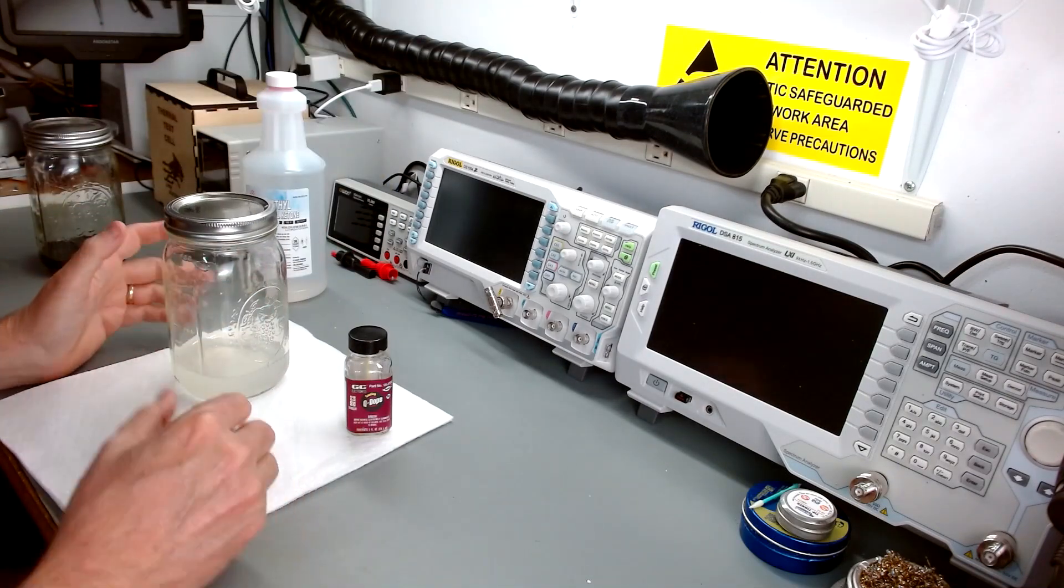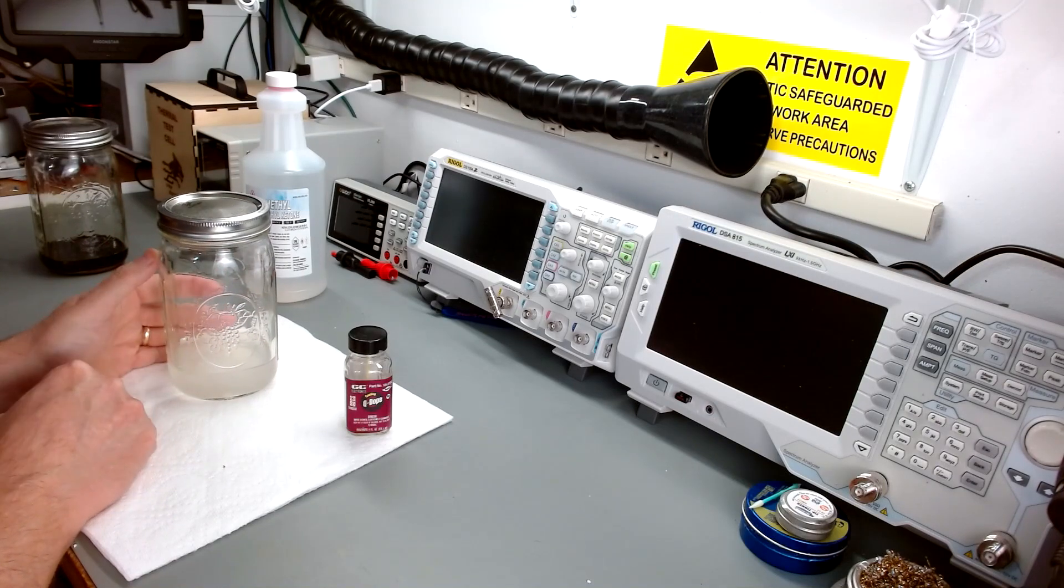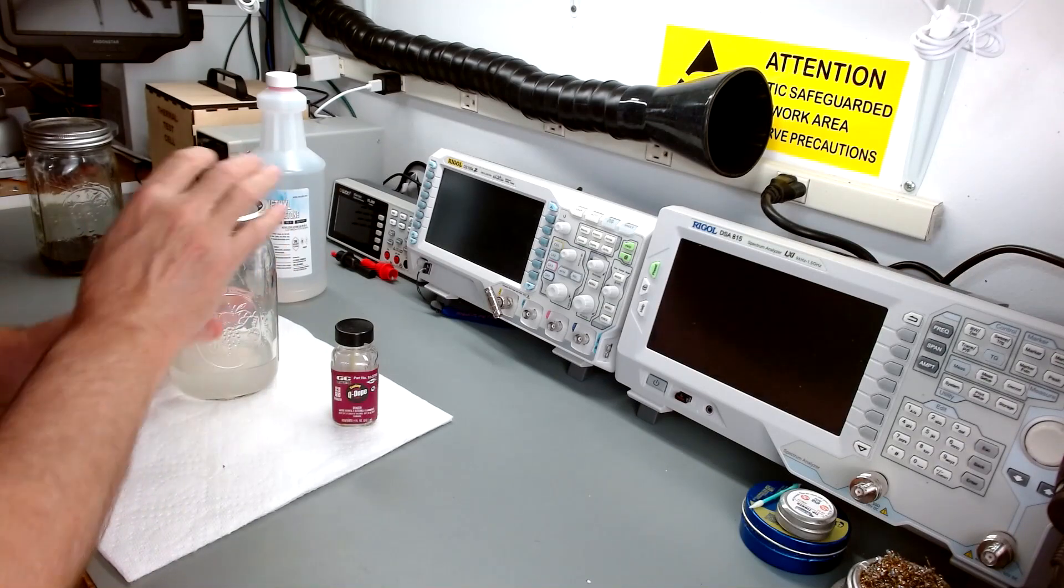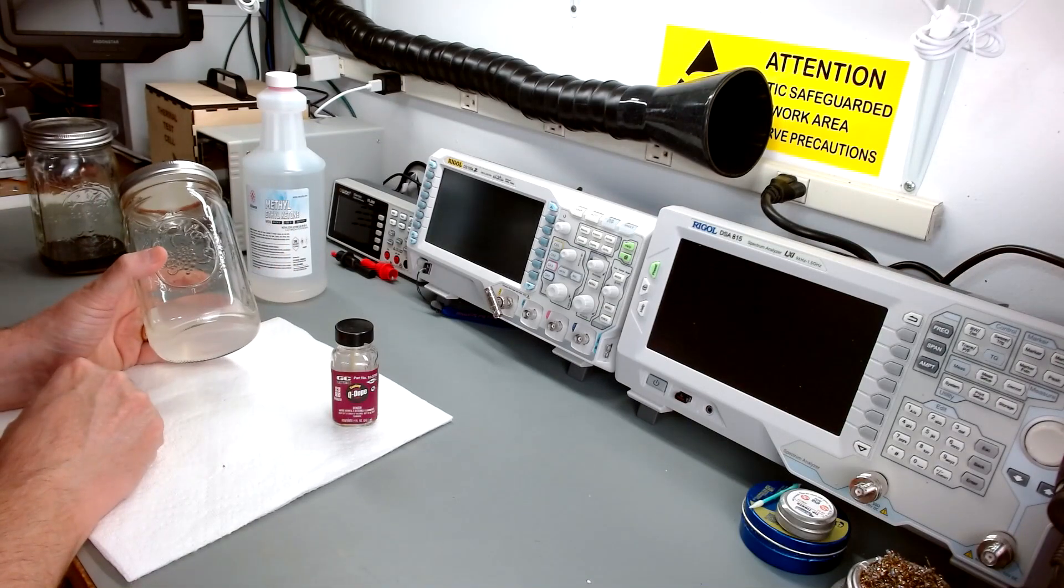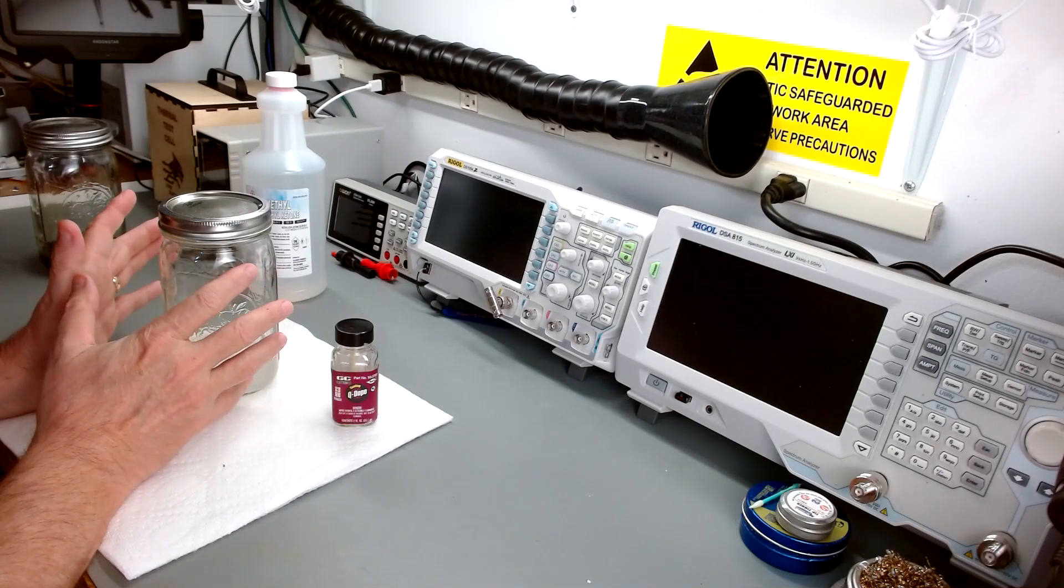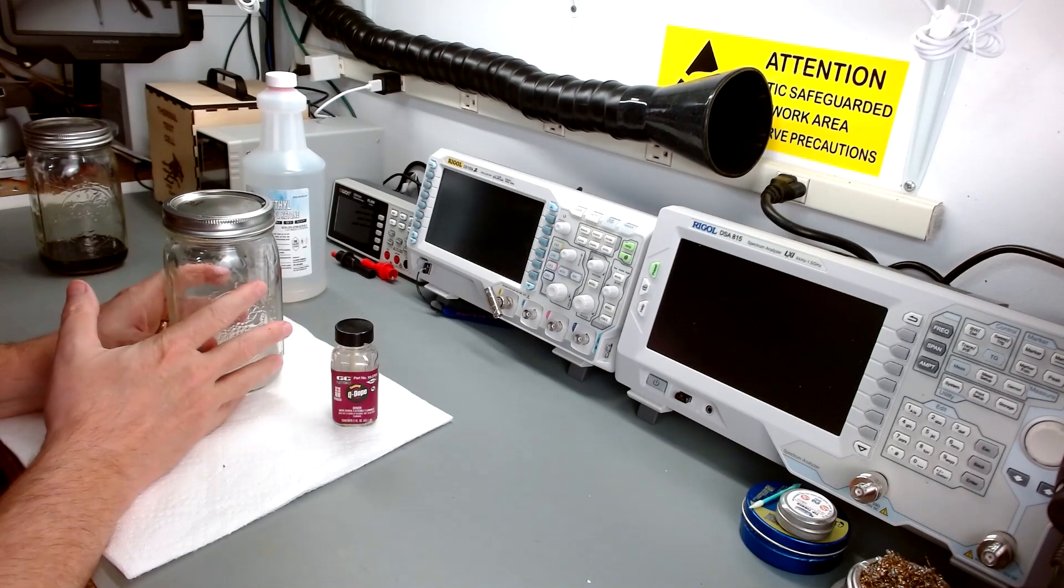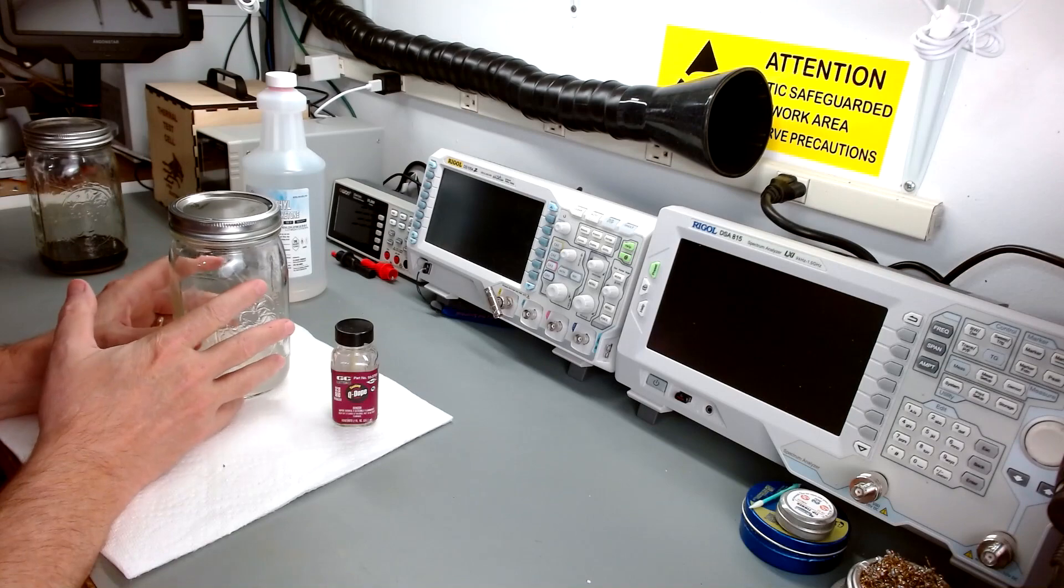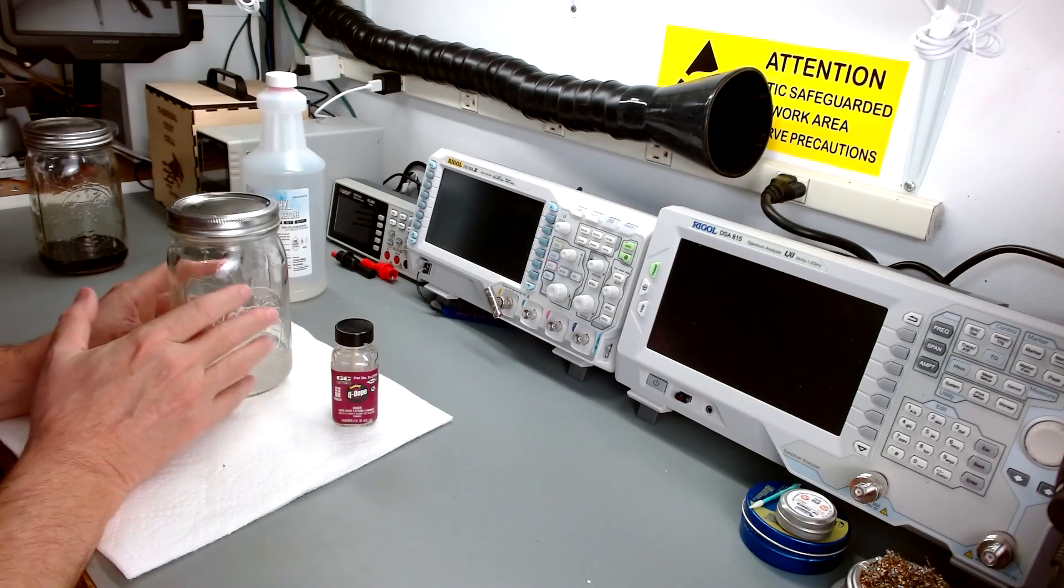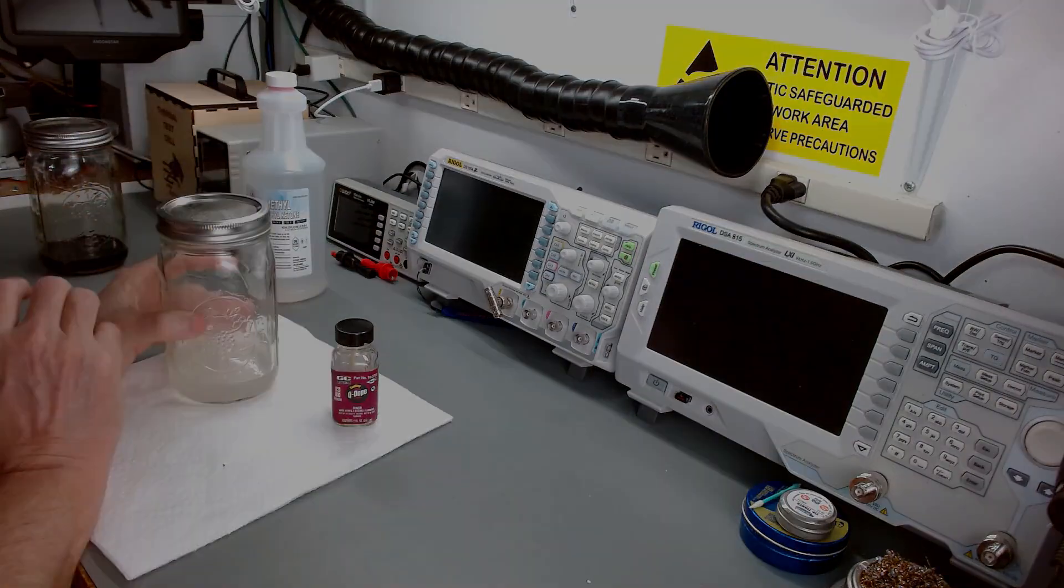So that's it, this is your Q-dope, you're ready to start using it. I'm going to put some of it in my bottle, I'm going to keep the rest in this mason jar, and that's how you make Q-dope for yourself. So you'll see me with some doped coils testing later as a follow-up to our coil test. So thanks for tuning in, hopefully that helped you out, learn something that might be useful for yourself.